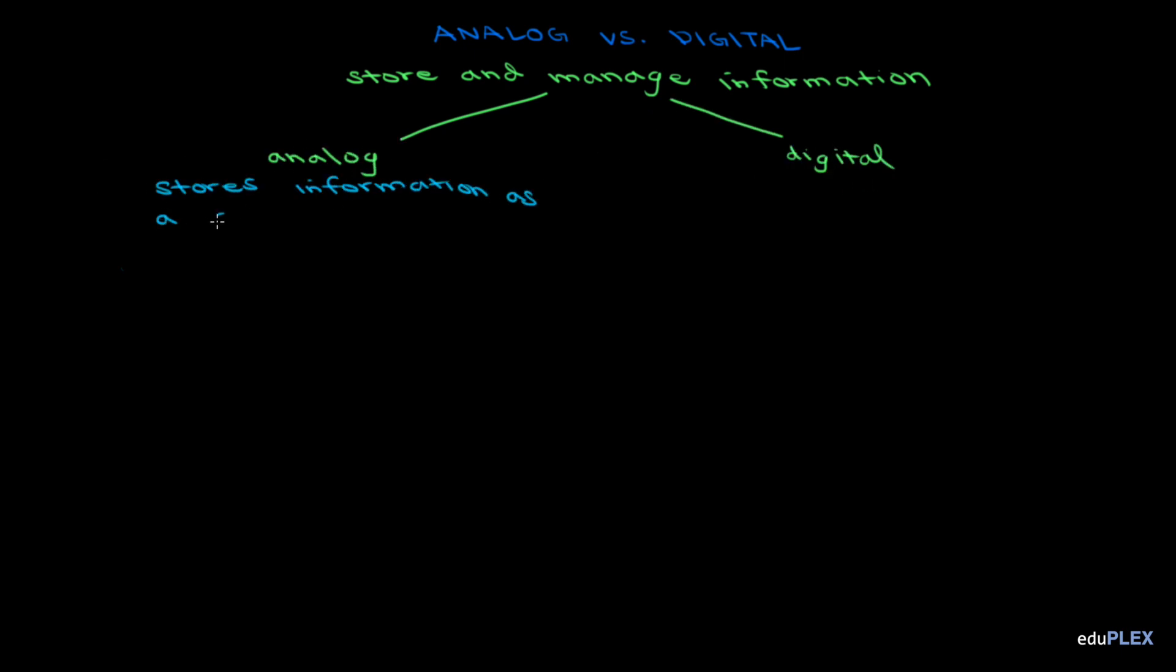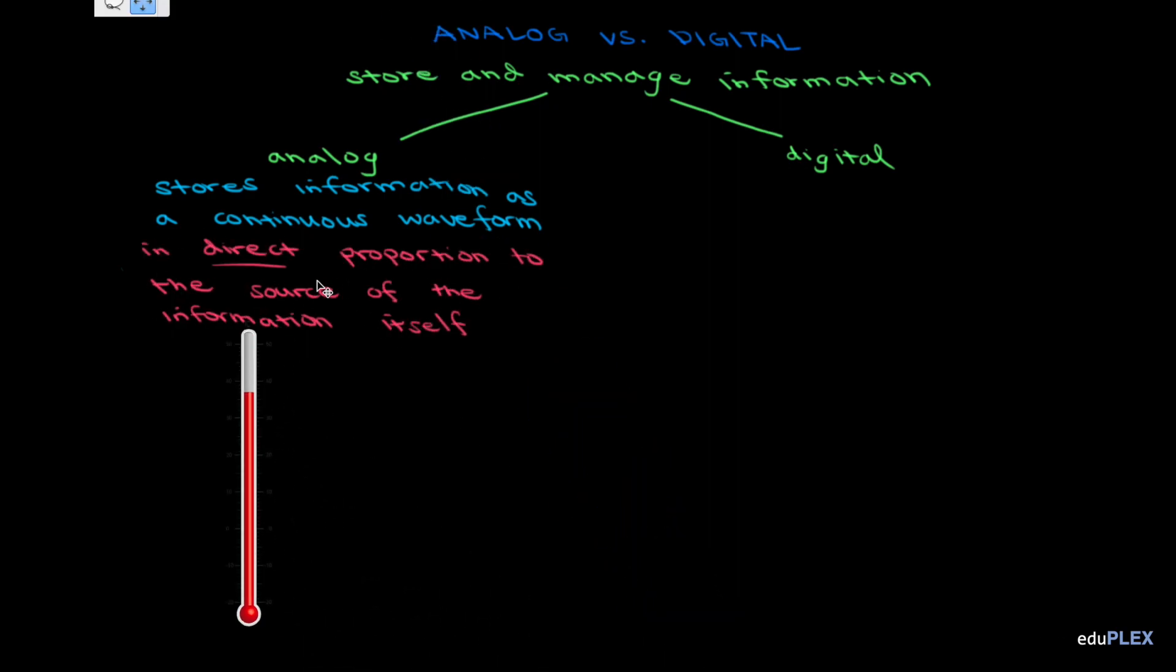Analog stores information as a continuous waveform in direct proportion to the source of the information itself. For example, if I have a mercury thermometer, the mercury rises and falls in a way proportional to the temperature itself.